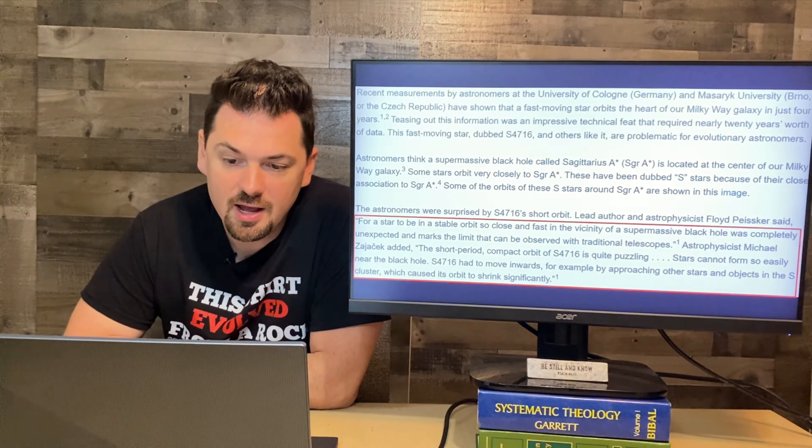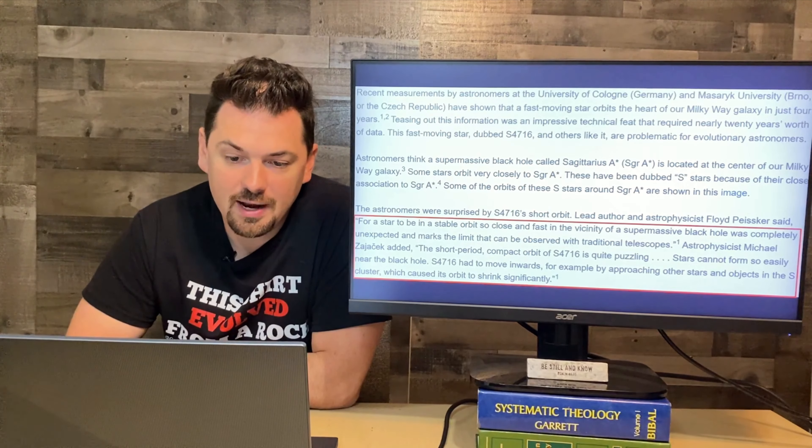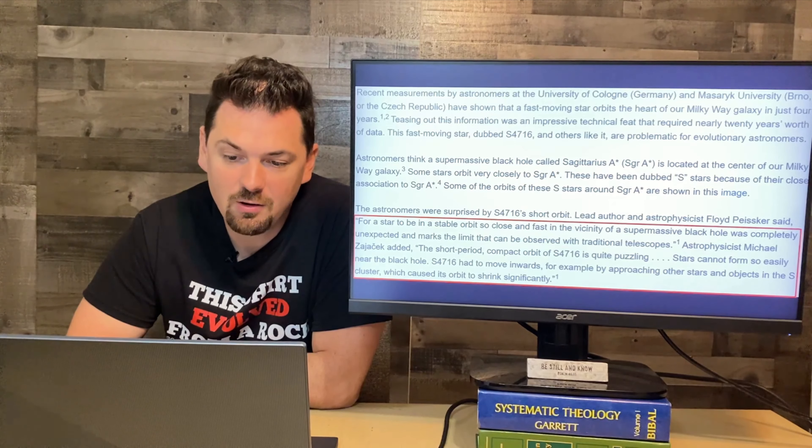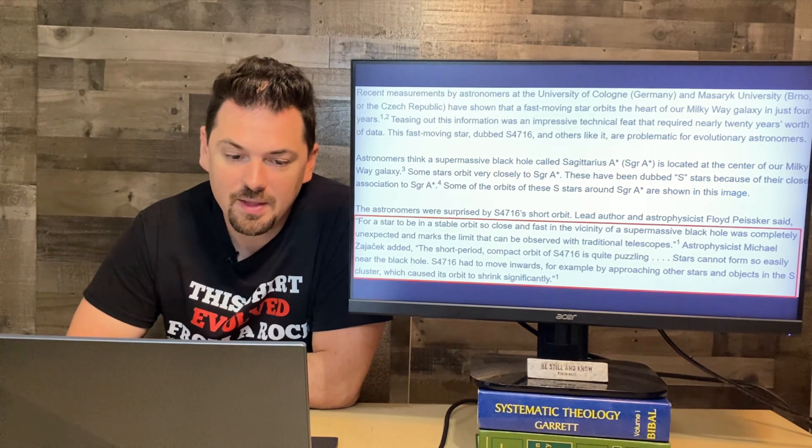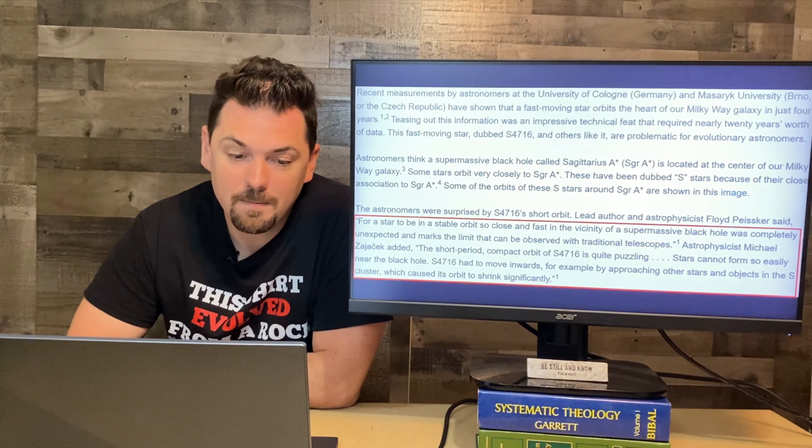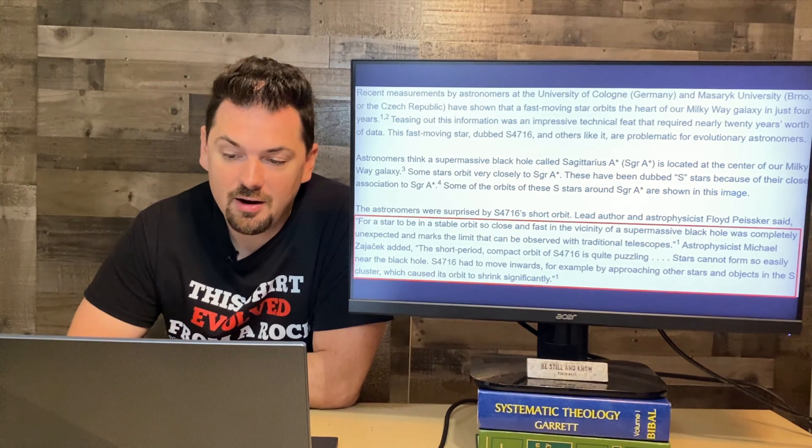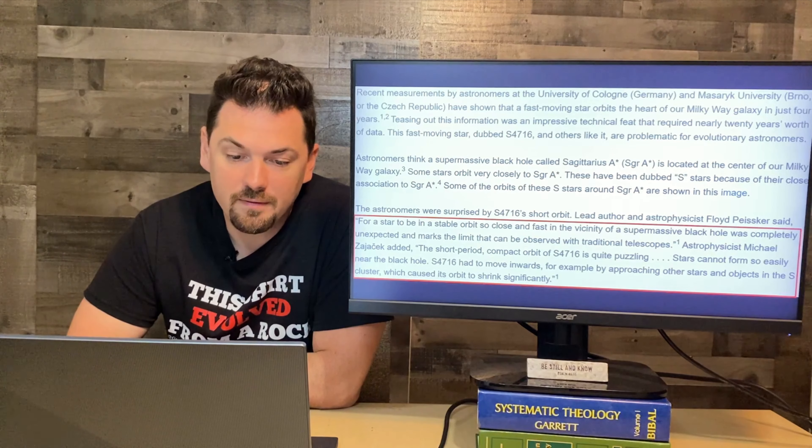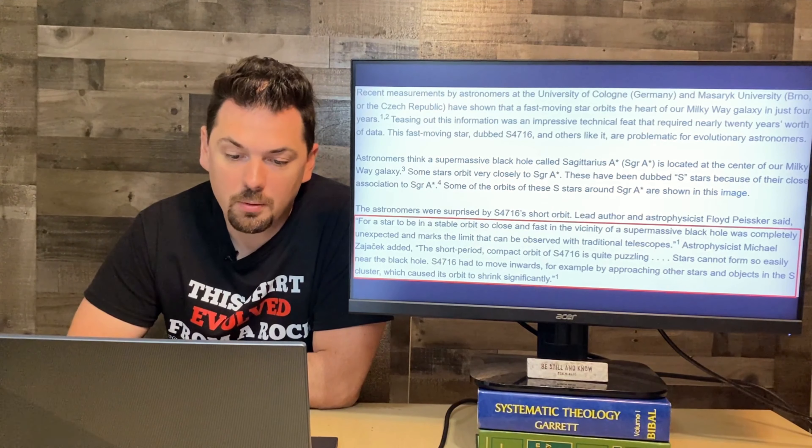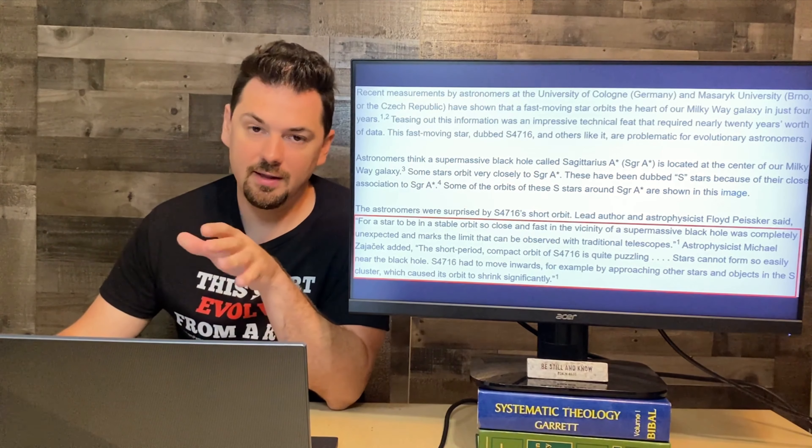Recent measurements by astronomers at the University of Cologne, Germany, and Masaryk University in Czech Republic, have shown that a fast-moving star orbits the heart of our Milky Way galaxy in just four years. Teasing out this information was an impressive technical feat that required nearly 20 years' worth of data. This fast-moving star, dubbed S4716 and others like it, are problematic for evolutionary astronomers. You can go to that website and look at the image in the article that it cites.